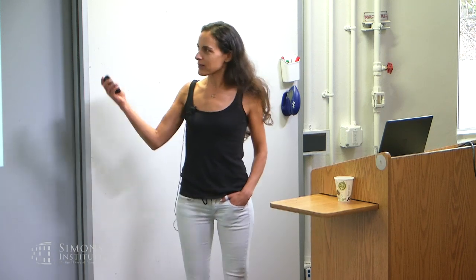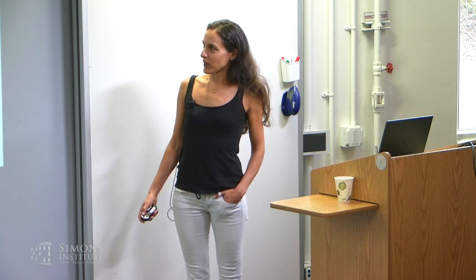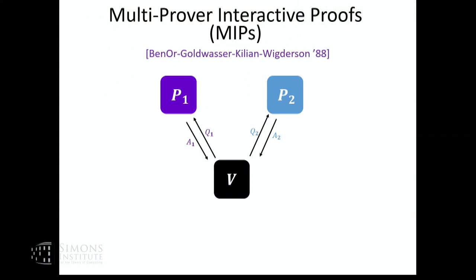I wish he was here to give the talk, but unfortunately for you, it's me. The proof model we're going to consider today is that of multi-prover interactive proofs. This notion was introduced by Ben-Or, Goldwasser, Kilian, and Wigderson, and this proof model really gave birth to PCP. It's a very influential proof model.